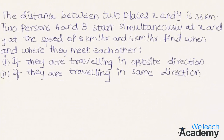Now let us solve an example. The distance between two places X and Y is 36 kilometers. Two persons A and B start simultaneously from X and Y at speeds of 8 kilometers per hour and 4 kilometers per hour respectively. We have to find when and where they meet, both when traveling in opposite directions and when traveling in the same direction.